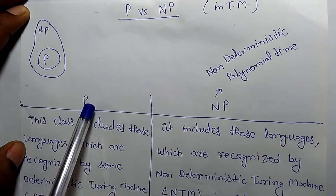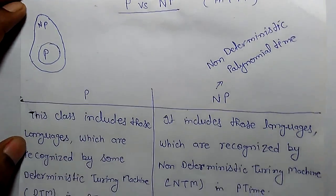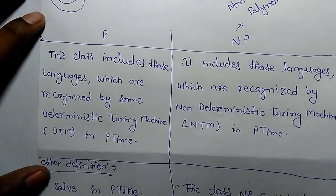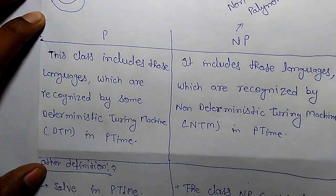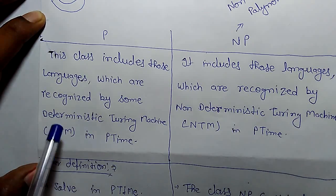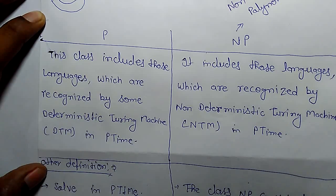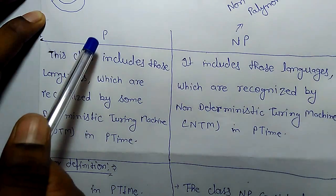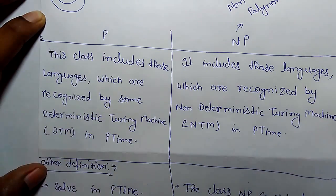So what are P class problems in a Turing machine? This class includes those languages which are recognized by some deterministic Turing machine in polynomial time. If there is some deterministic Turing machine that can solve a problem in polynomial time, that will go in P class.